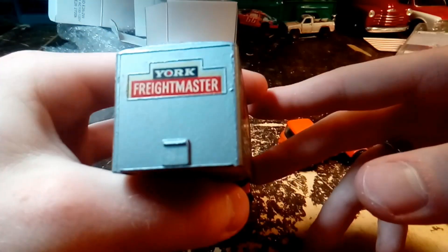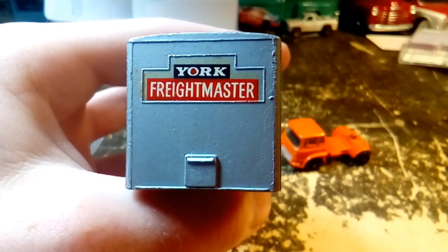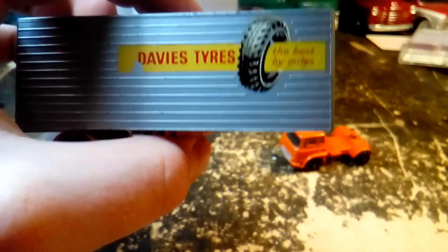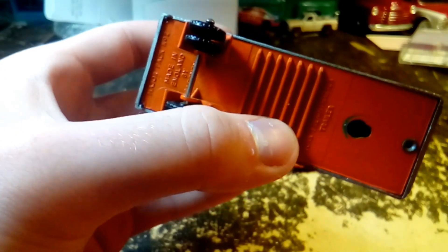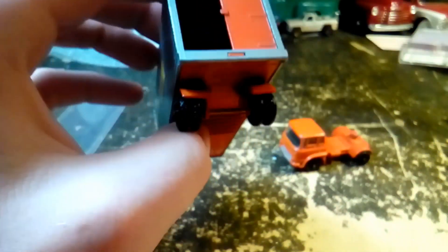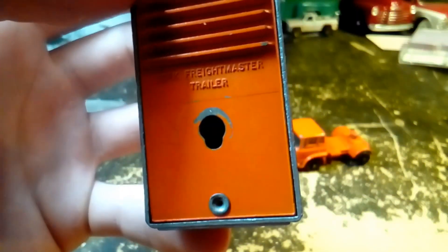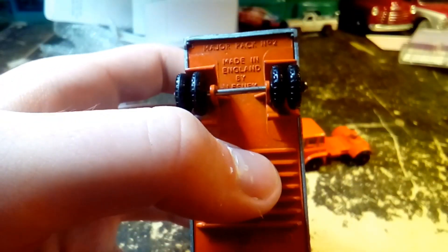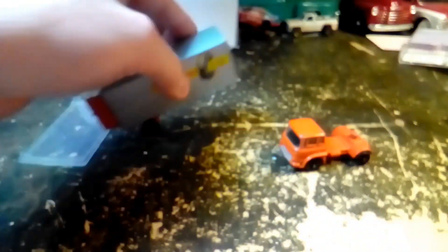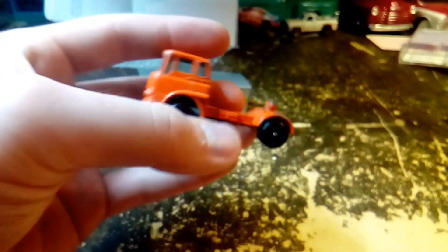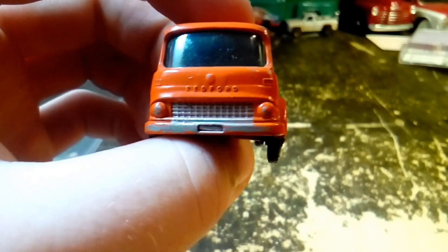It's got the York Freightmaster emblem on the front of the truck there. And then same decal on this side. And it has all the tires on it. Sometimes these Lesneys, when they're duals, the tires go missing. York Freightmaster trailer. And this is major pack number 2. I suppose I should say that. Take a look at our little Bedford truck here. Says Bedford on the front there.